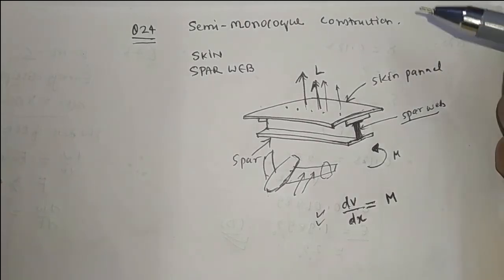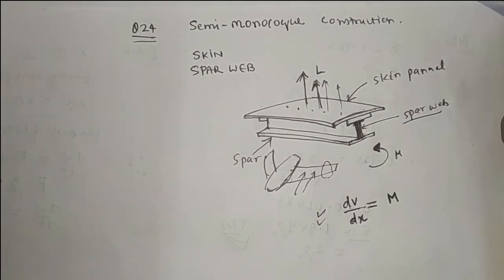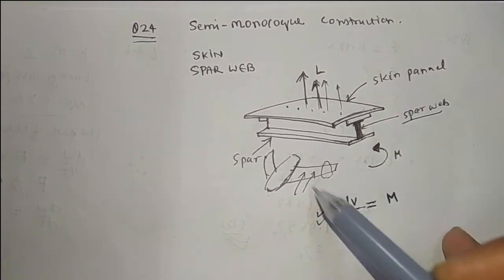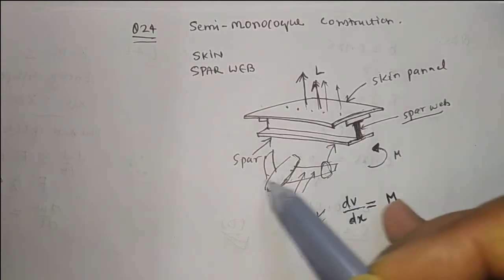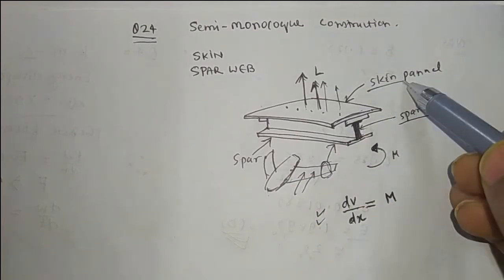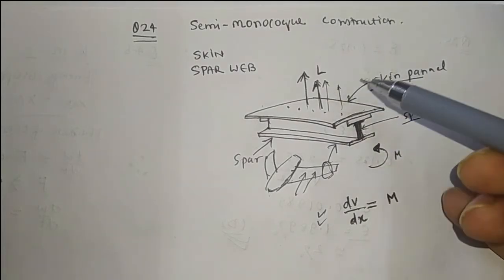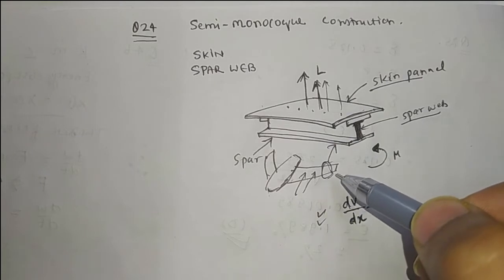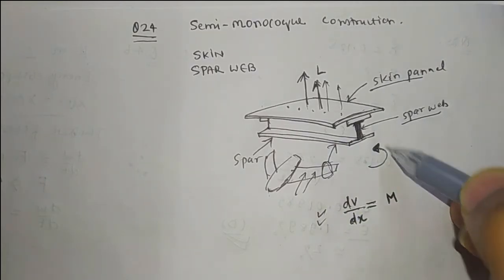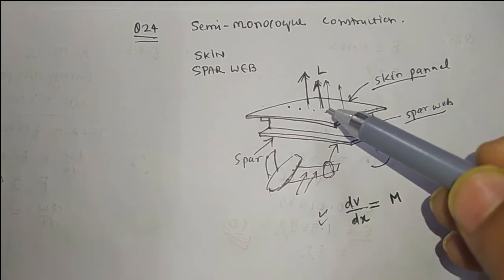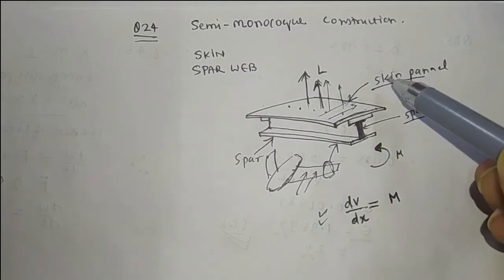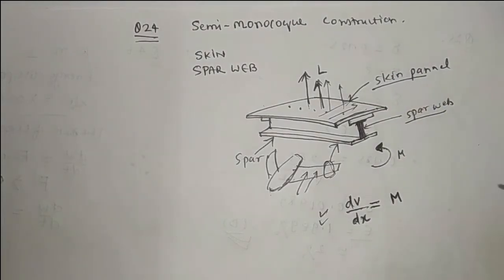Question number 24: In semi-monocoque construction of aircraft, the skin and spar webs are the primary carriers of load. The spars run throughout the span and the wing skin is subjected to aerodynamic lift forces, causing the wing to bend. The spar webs efficiently carry shear stresses, and the skin panels also carry shear stresses due to drag forces. Option D is the right answer.